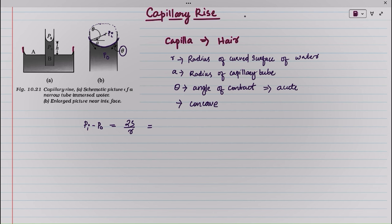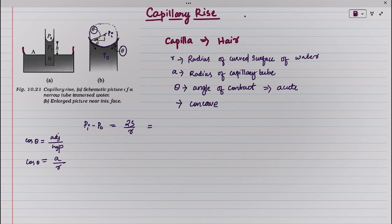We have to rewrite the radius R in terms of the radius of the capillary tube. From the triangle, this angle is also theta. So cos theta equals the adjacent side by the hypotenuse, giving cos theta equal to A by R. Therefore R equals A by cos theta. Substituting, the pressure difference becomes 2S by A cos theta.